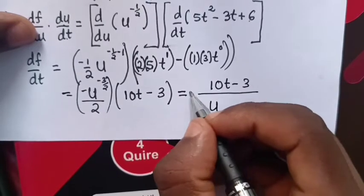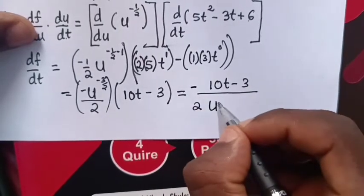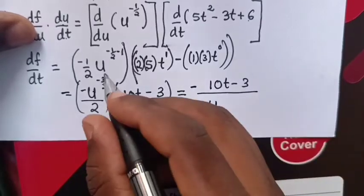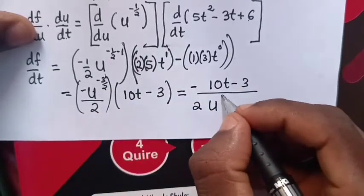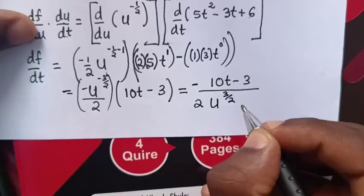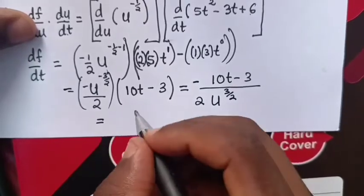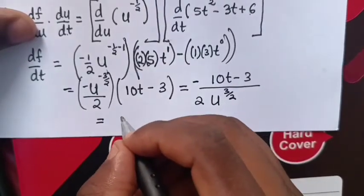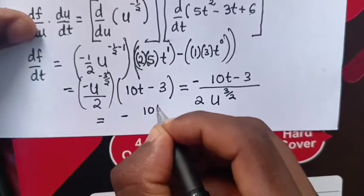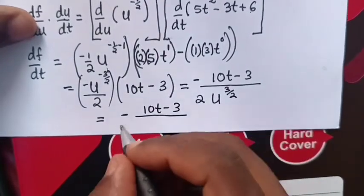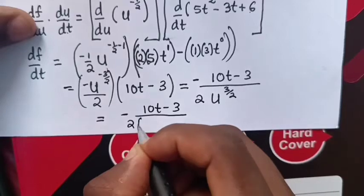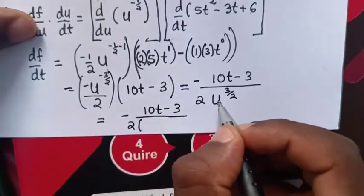And don't forget the negative. So, here it will be power of 3 over 2.